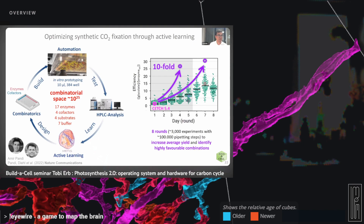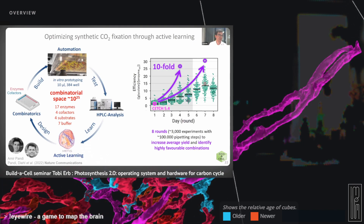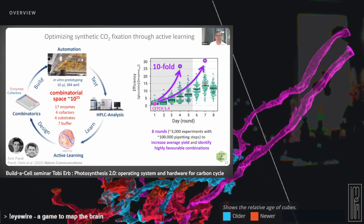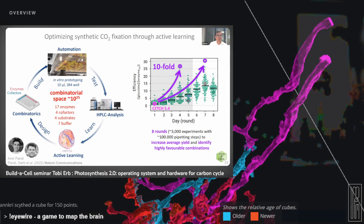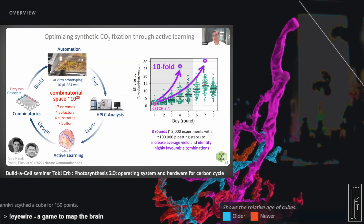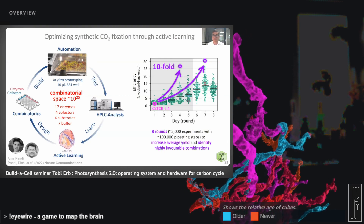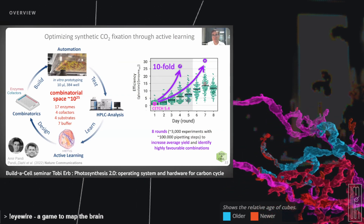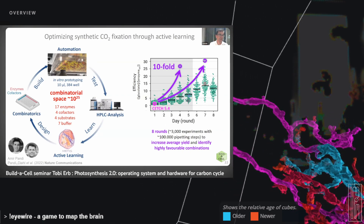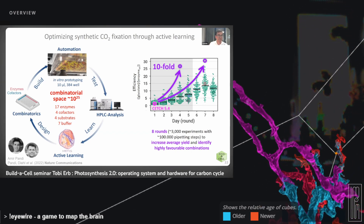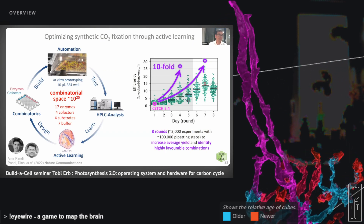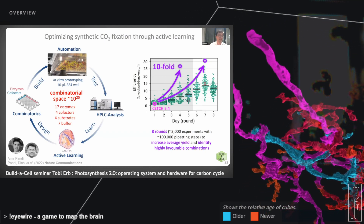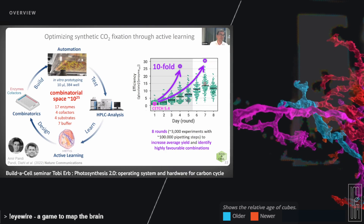This allowed us to explore a space of approximately 10 to the power of 25 — 17 enzymes, four different cofactors, four different substrates, and seven buffers. We ran around 3,000 experiments, approximately 100,000 pipetting steps, and used active learning to navigate the space. Within eight rounds of optimization, this allowed us to move forward by a factor of 10 in efficiency. It took considerably less time to improve the system by another factor of 10 compared to our earlier rational approach.